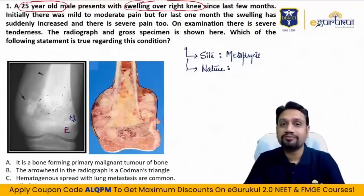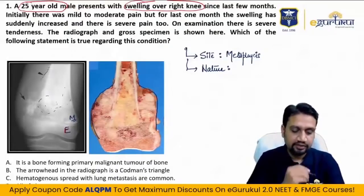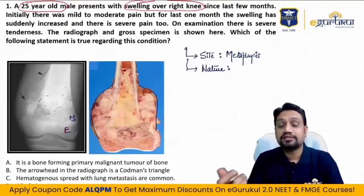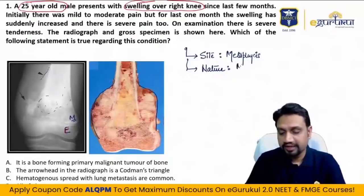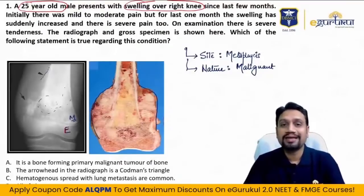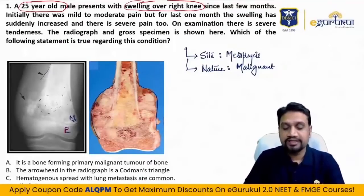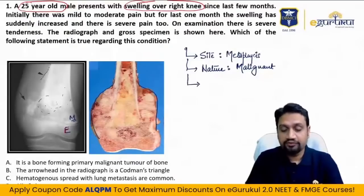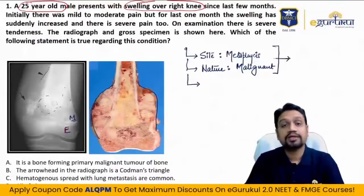Features of malignancy seen in this X-ray: destruction of the cortices and elevation of the periosteum — periosteal reaction. Nature is malignant. By these upper two points, metaphysis plus malignant — only one tumor fits: osteosarcoma. If you have revised the tumors using that single image from the class, you can easily make out the diagnosis.